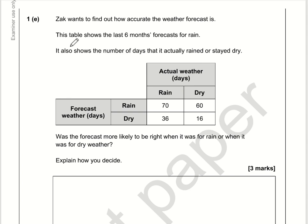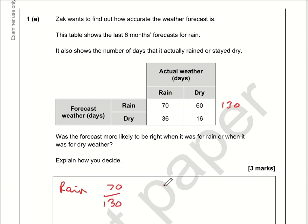Question 1E. Rain has been forecast on 70 plus 60, which is 130 occasions, and of those 130 they got it right 70 times. So successful rain prediction was 70 out of 130. For dry, it has been forecast 36 plus 16. 36 plus 16 is 52, and they got it right 16 times, so 16 times out of 52.